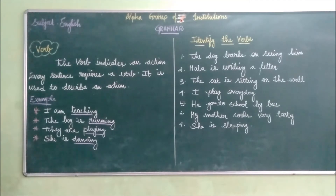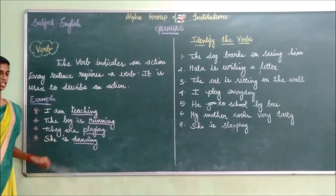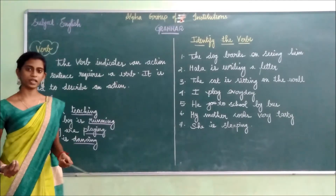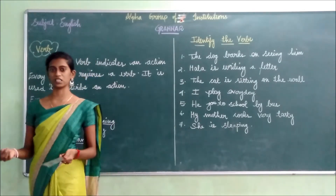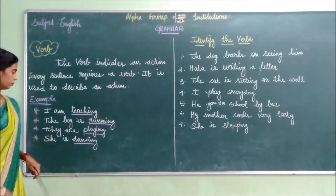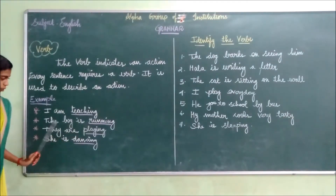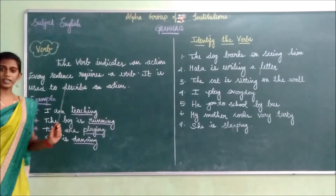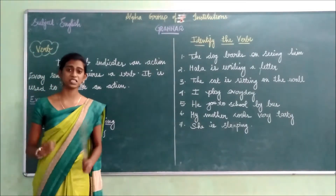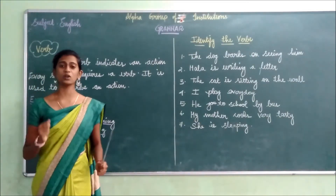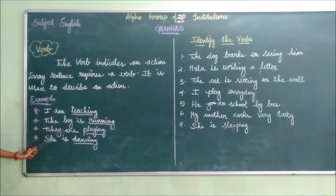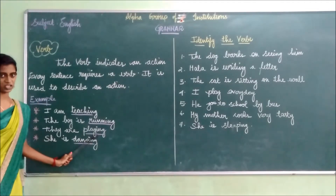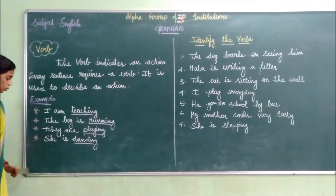I have given you some examples. I am teaching — what am I doing? I am teaching to you, so it indicates an action. It is known as the verb. The boy is running — the boy is not standing in the same place, he is running, so running indicates an action. They are playing — playing is also an action, so it is known as the verb.